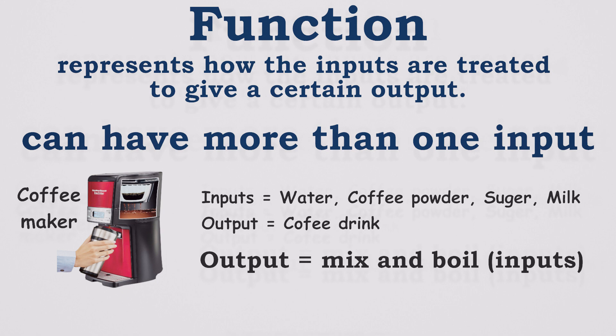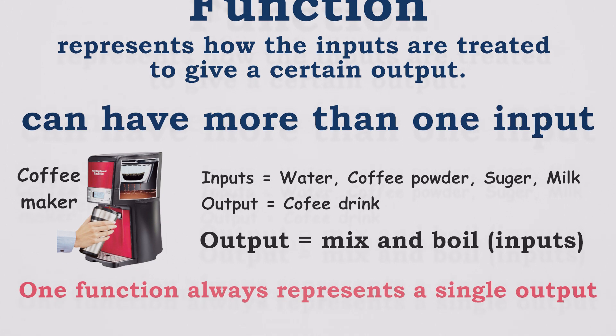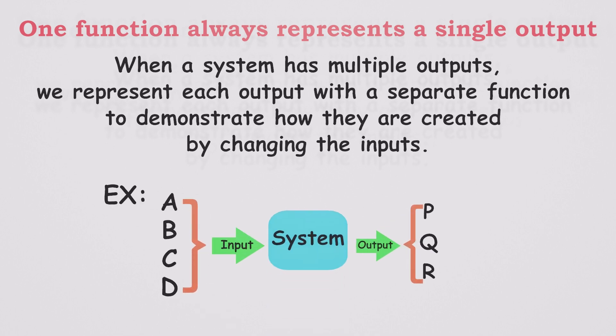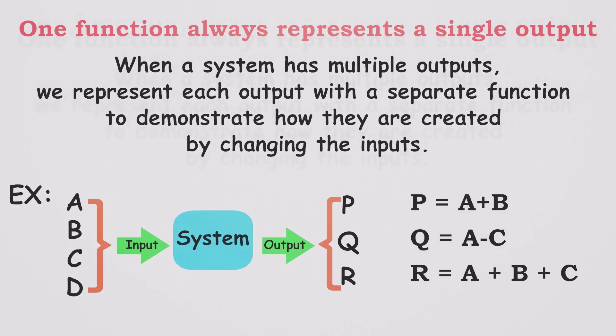There are several inputs to this function, but always keep in mind, one function always represents a single output. When a system has multiple outputs, we represent each output with a separate function to demonstrate how they are created by changing the inputs. Each function describes the relationship between the inputs and one specific output.